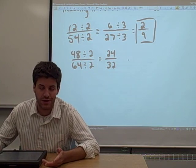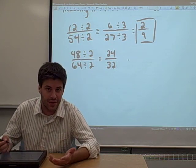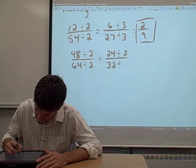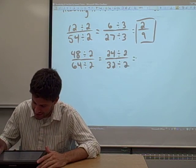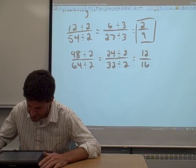And then you might notice, hey, I can probably do that again to this fraction, make it even smaller. And hey, why not stick with it? Let's divide it by 2 again. You can divide both the numerator and the denominator by 2 again evenly. You get 12 over 16.